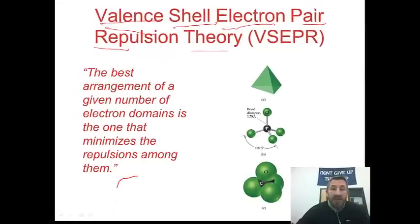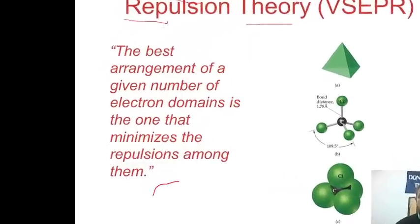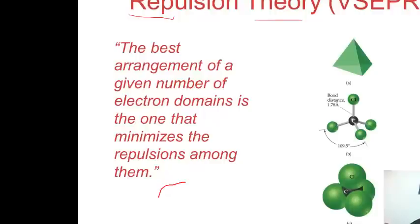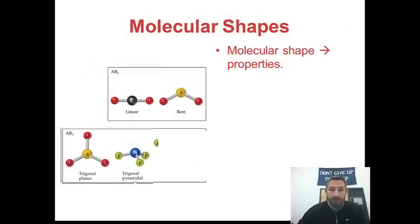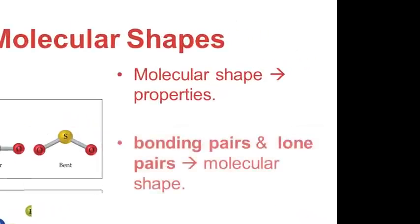So how is this important? Electrons repel. So what happens with the shape is electrons are going to move as far away from each other as possible. They're going to have an attached atom to the central atom, and that gives us a different arrangement or shape. The best arrangement of a given electron domain is one that minimizes repulsion among atoms. So molecular shapes determine properties, and the bonding pairs and the lone pairs determine the molecular shape.